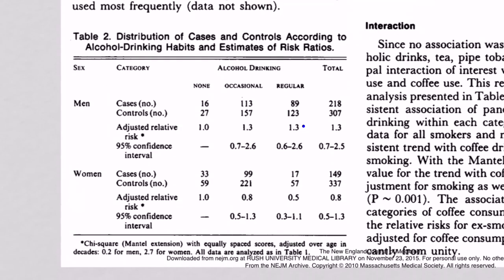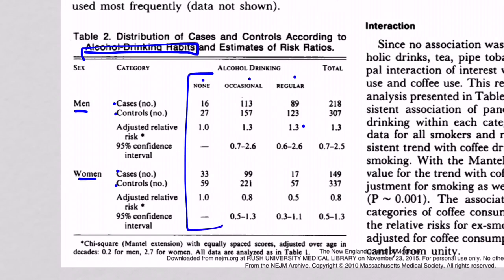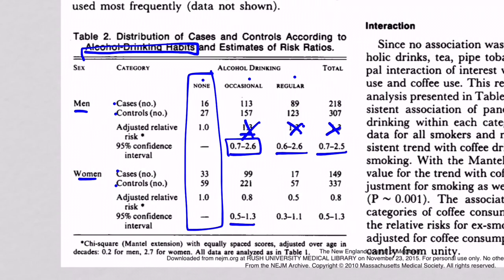Now let's go to Table 2, which looks at alcohol drinking habits. Same structure: men and women, cases and controls, split into never drank, occasional drinkers, and regular drinkers. The never-drank group is our referent. Occasional drinkers: 1.3, but the confidence interval includes one — don't care. All other values also include one in their confidence intervals. So we don't find any statistically significant association between alcohol use and pancreatic cancer here either.